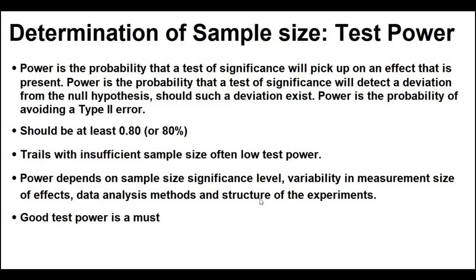Determination of sample size and test power. Power is the probability that a test of significance will pick up on an effect that is present. Power is the probability that a test of significance will detect a deviation from the null hypothesis, should such a deviation exist. Power is the probability of avoiding a Type II error in the research. It should be at least 0.8 or 80 percent. Trials with insufficient sample size often have low test power. Power depends on sample size, significance level, variability in measurement, size of effect, data analysis method, and the structure of the experiment. Good test power is a must.